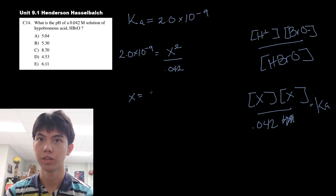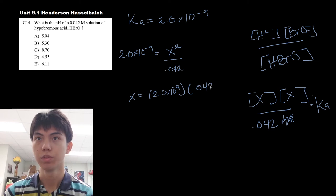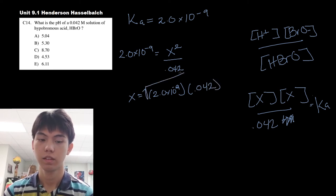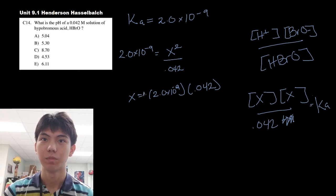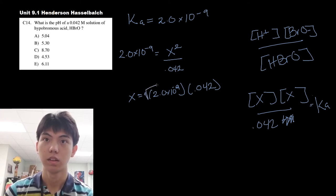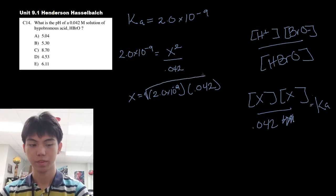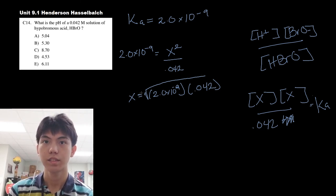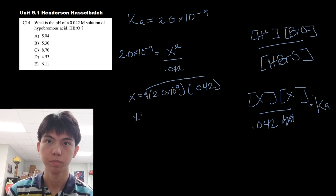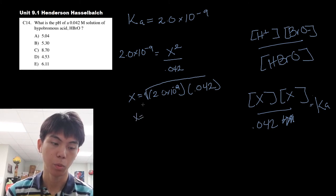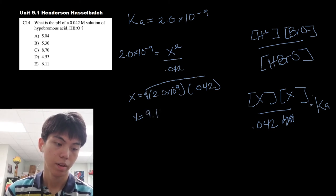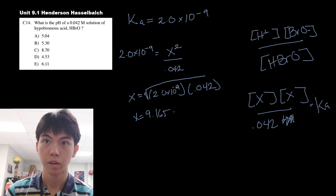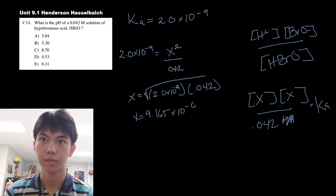So x is equal to this times this, 2.0 times 10 to the negative 9 by your 0.042, and you take the square root of this. The square root of this, so x is now equal to 9.165 times 10 to the negative 6.